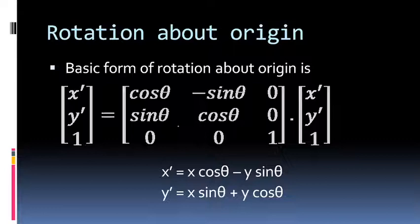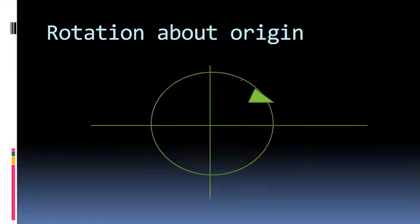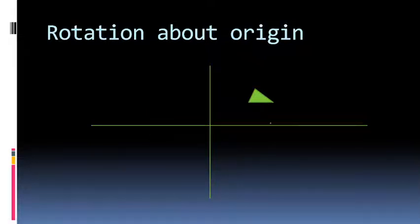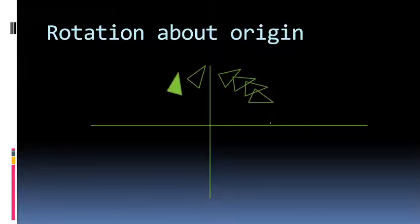Now if we consider this rotation, it will take place along a circular path — we will be rotating this triangle along that circular path because we are rotating it about the origin, and all three points will be rotated about the origin. Each point will trace its own circular arc about the origin, and we will get the rotation in this form. This will be the path of rotation.